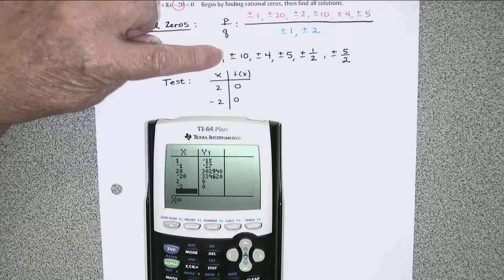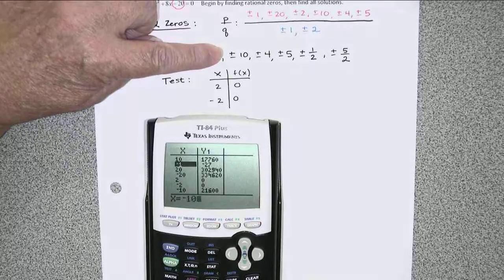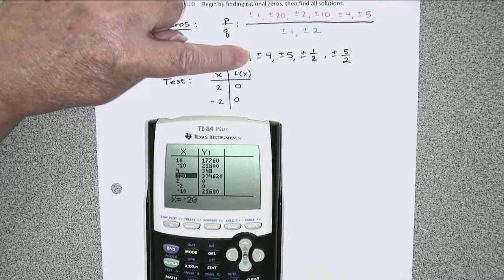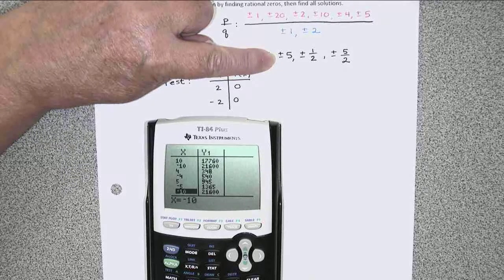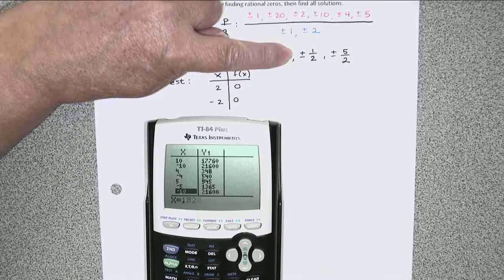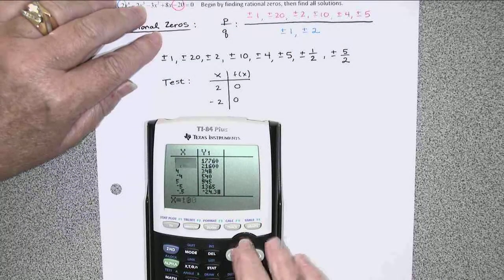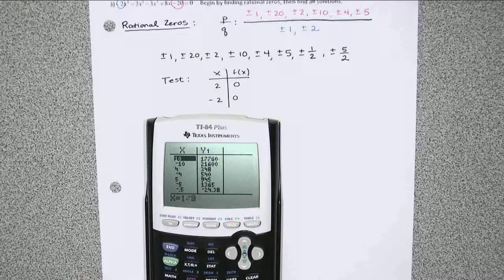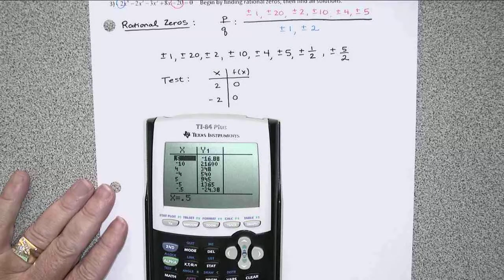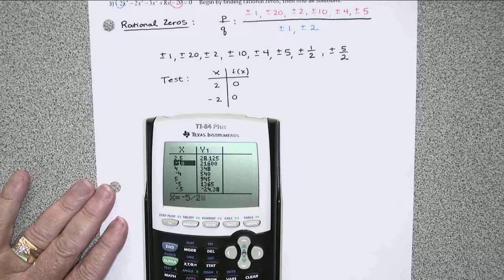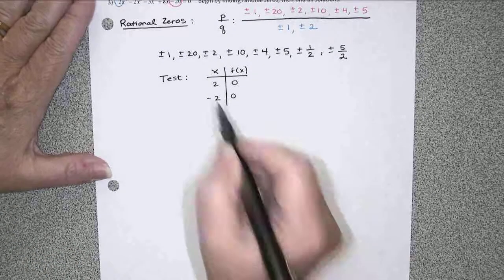Let's keep going. 10 and negative 10, no zeros. 4 and negative 4, also no zeros. 5's, no good. 1 half and negative 1 half, also no zeros. 5 halves and negative 5 halves, also no zeros. So there we go. 2 and negative 2 turned out to be the only zeros of this polynomial.